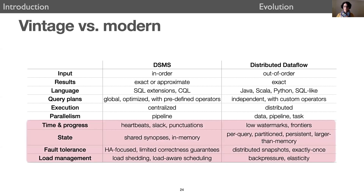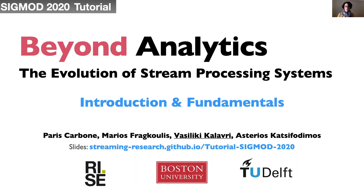In the tutorial, we'll focus on four highlighted critical aspects of streaming systems. The part on time and progress will explain and compare early progress mechanisms such as heartbeats and punctuations to mechanisms used today such as watermarks and frontiers. The part on state management will cover the evolution of streaming state from in-memory synopsis to the large partitioned and persistent state encountered today. The part on fault tolerance will discuss early high-availability mechanisms as well as more recent snapshot-based approaches for exactly-once guarantees. Finally, the part on load management will cover load shedding and load-aware scheduling of data stream management systems through to the back-pressure and elasticity approaches of today. Thank you very much and see you in the next parts of the tutorial.